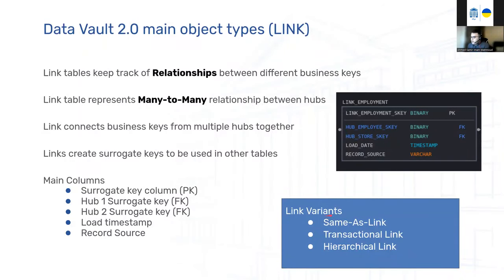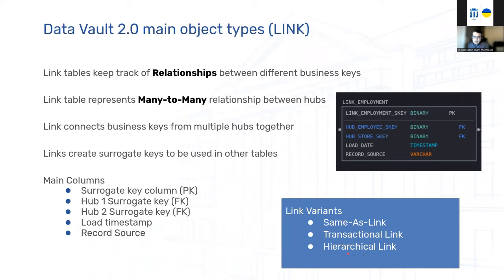Link tables have several variants. There is the standard link as shown in the example. There is also a Same-As Link, which is a self-link between two records in the same Hub. There is a Transactional Link or Non-Historizing Link for modeling transactions. And there are Hierarchical Links. Each type has specific use cases, and you choose based on your situation.